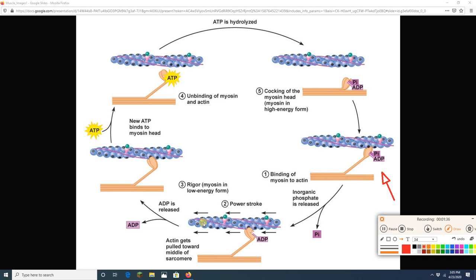Now, in order for contraction to keep going, myosin's got to let go and do this all over again. To let go, myosin needs to grab onto a new ATP. So when myosin grabs onto a new ATP, it lets go. Then it's going to break down that ATP, and that puts it in this high energy state again. And as long as the actin is still exposed, myosin can grab on, and we can repeat this process over and over. And the sarcomere gets shorter and shorter and shorter.